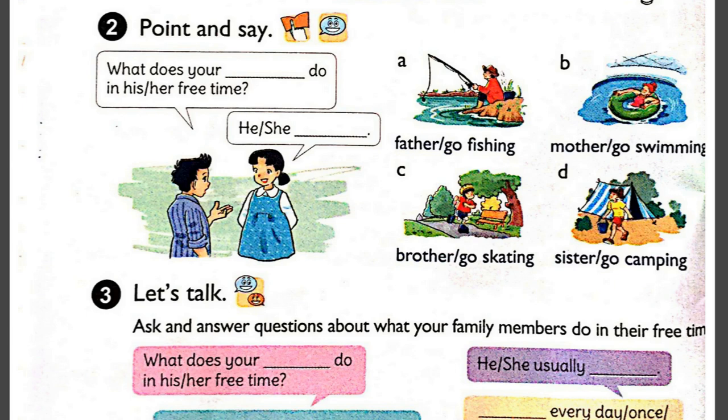C. Brother. Go skating. D. Sister. Go camping.